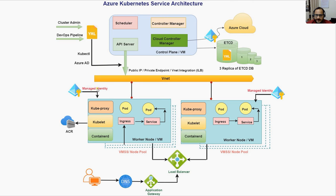Now let's understand the worker node. The worker node is responsible for running your application. Whenever we create an AKS cluster, it always creates a worker node inside Virtual Machine Scale Sets — so it's basically a group of virtual machines. On each worker node, we have components like a container runtime such as Docker.